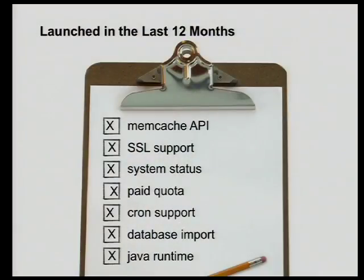Over the past year, we've also launched a number of features and improvements to App Engine, including SSL support, Memcache API, the system status site, access to secure data behind the firewall, and the ability to pay for usage beyond our free quotas. We've also found there are additional things that we'll launch in the coming months, including background processing for your jobs and large object support. I'd urge you to come to our sessions here at Google I/O over the next two days. Certainly the feature that's generated the most buzz recently is our Java language support. The interest in our Java support since we launched it a month and a half ago has been remarkable — in a matter of days, even hours.